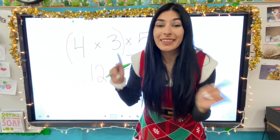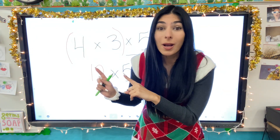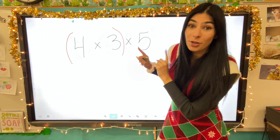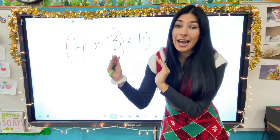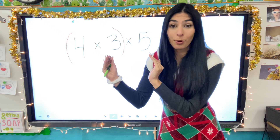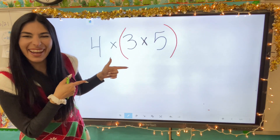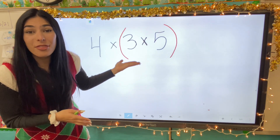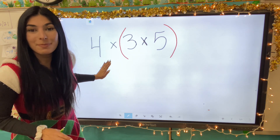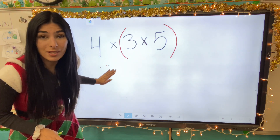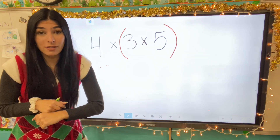That was just one way to solve that problem. This is associative property, so the parentheses can switch places. The first time, four and three were hanging out; now the three and five are going to hang out first. It doesn't matter that we have four times in front of the parentheses — parentheses go first.